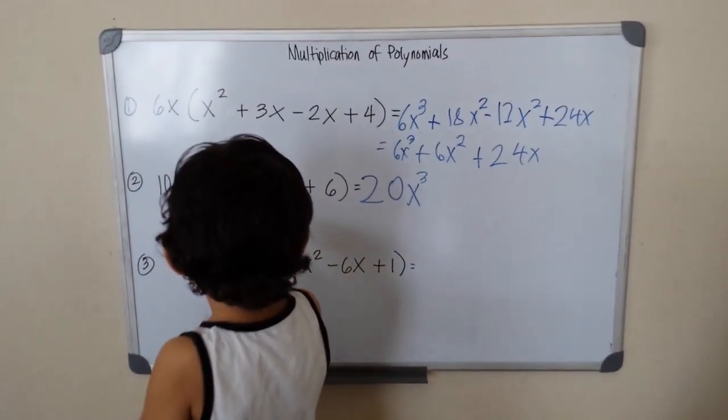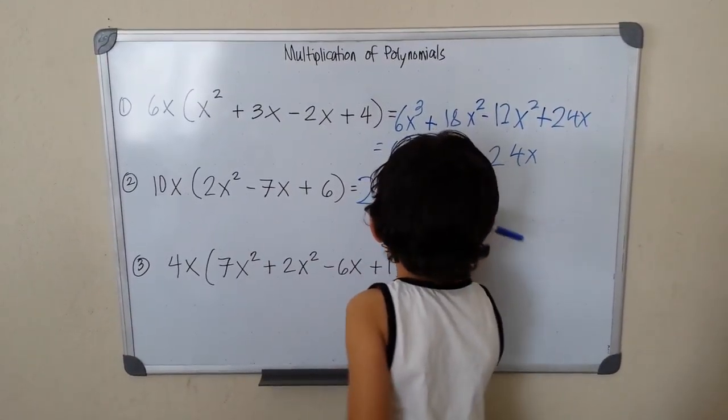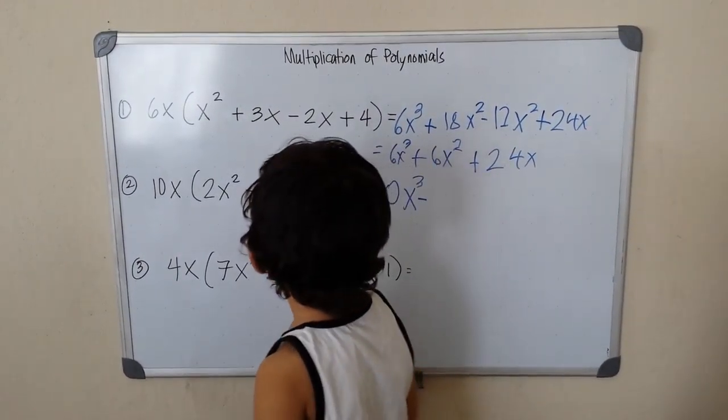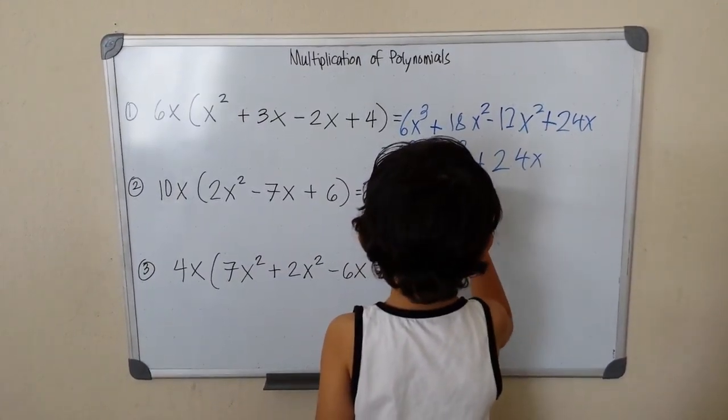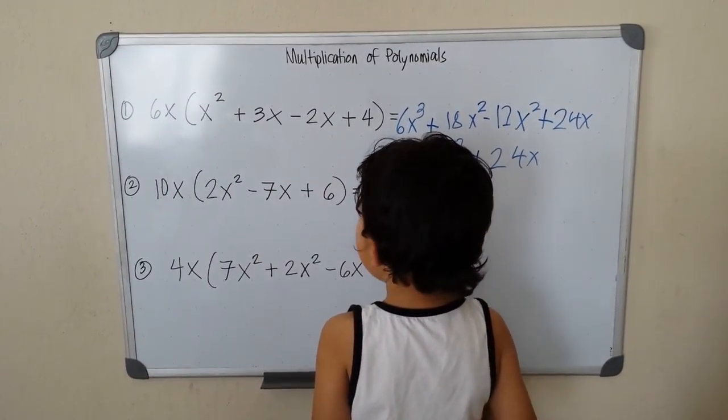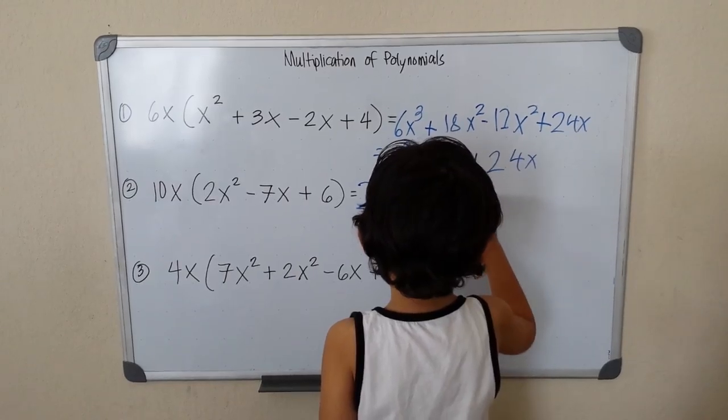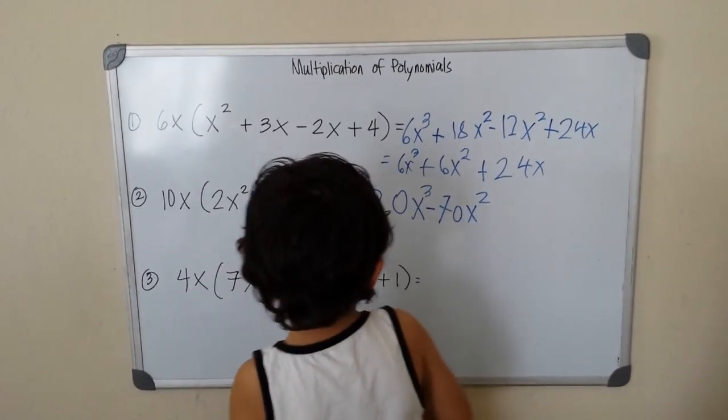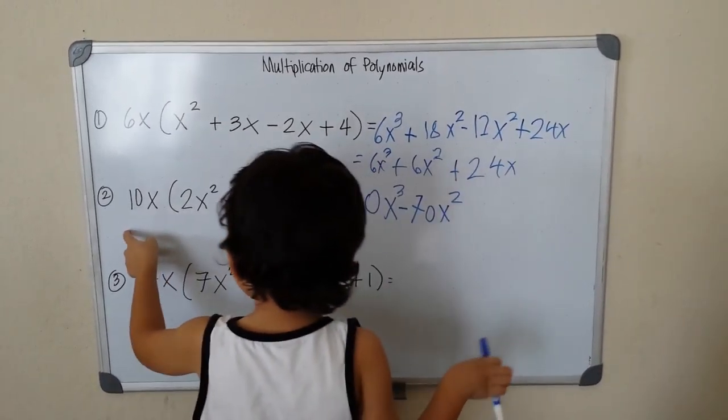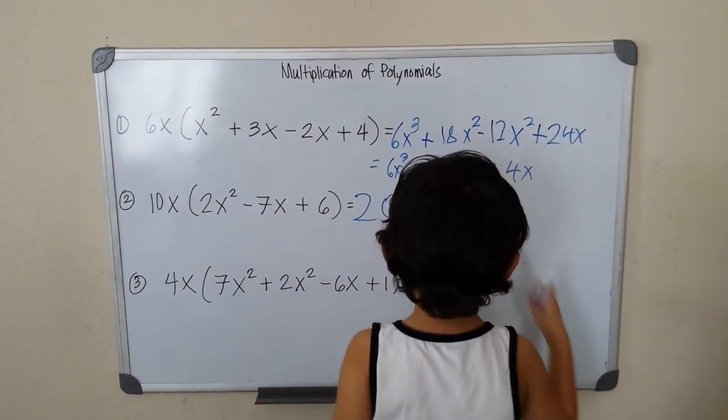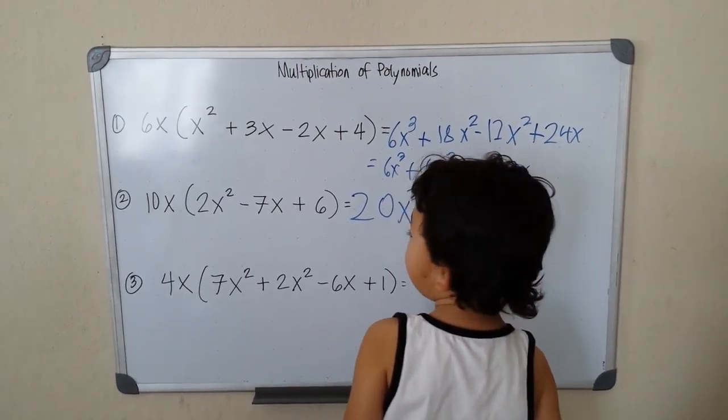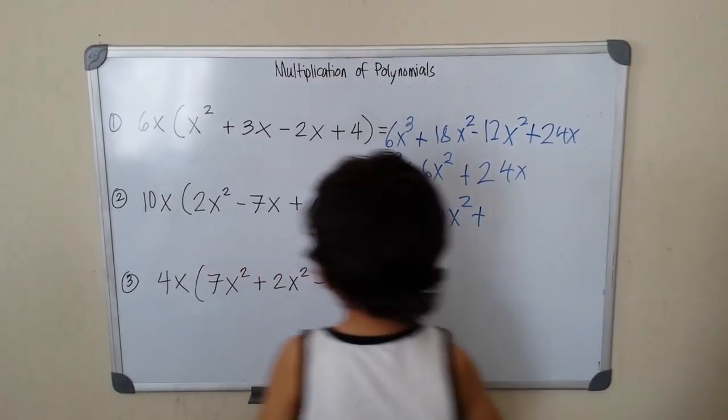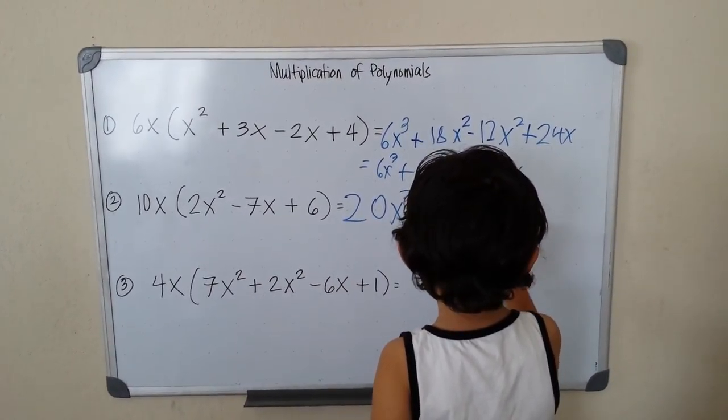And 10 times 7 equals 70x squared. So 10x squared. I need to get the symbol, plus 10 times 6 is 60, 60x.